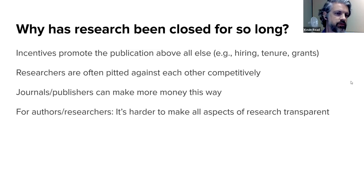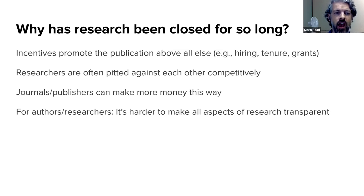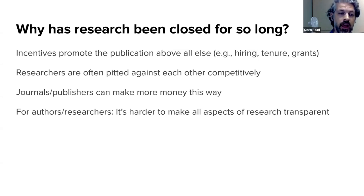Why has this been happening for so long? The incentives promote publication above all else — if you want a grant, tenure, or to get hired, people look at publications first. Researchers have also been pitted against each other competitively rather than working collaboratively. Journals and publishers make more money this way. And generally, making all your research understandable and available takes more time — which is a real challenge given the pressure to publish.